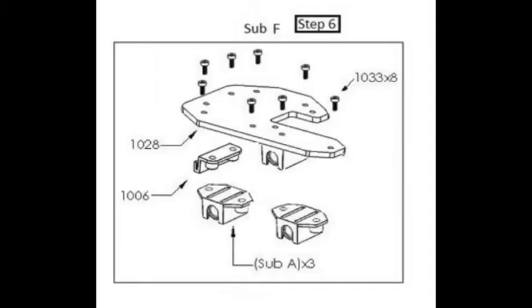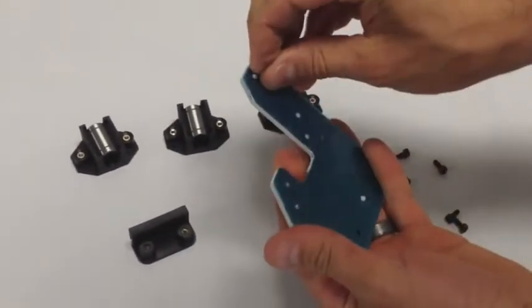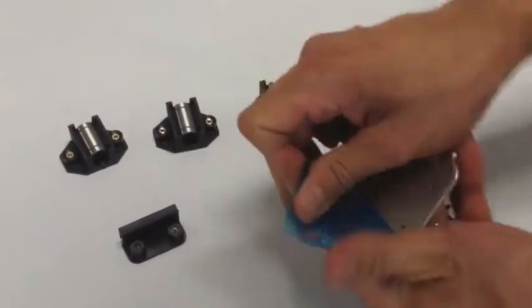We're sub-assembly F. We're going to begin by taking our head plate 1028 and we're going to remove the plastic from the top and the bottom side.